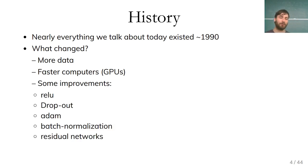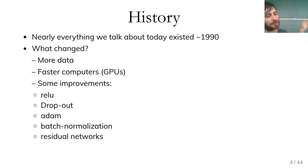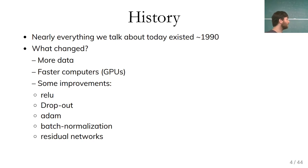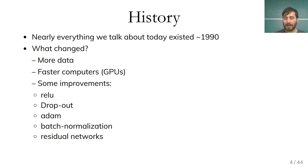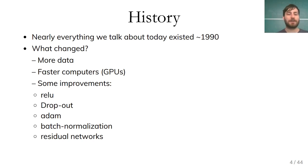There are a couple of improvements that each significantly advanced the state of the art in the last 10 years: the ReLU non-linearity, dropout, Adam which is an optimizer, batch normalization, and residual networks. These are all tricks and techniques that improved the technology quite a bit. But even without any of these tricks, neural networks would still be quite competitive if you have a large enough dataset.